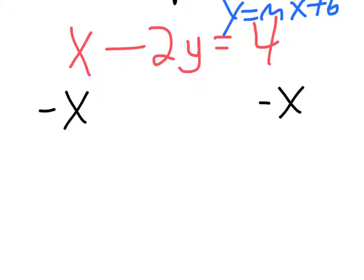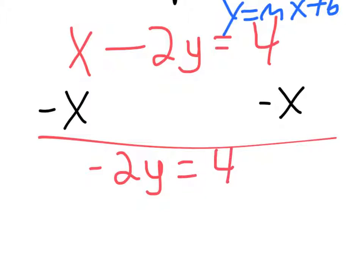So we'll take one away right here. That leaves us with negative 2y. Notice I didn't drop my negative sign here. That equals 4 minus x.